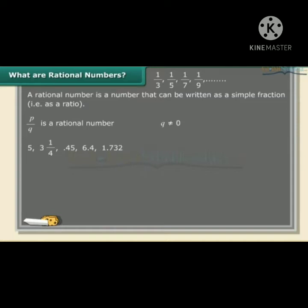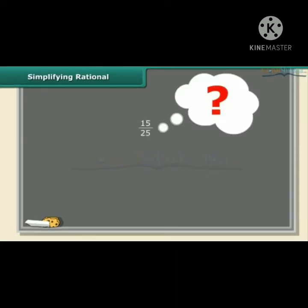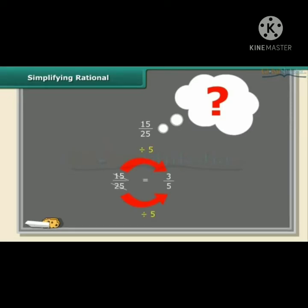Can you tell me whether these numbers are rational numbers or not? Yes, you are all correct. These numbers are rational numbers because they can be expressed in the form of P upon Q. Sometimes a rational number may not be in its simplest form — it can be further simplified. Divide the numerator and denominator by 5 to get 3 by 5. This is the simplest form. Remember, we can simplify a fraction by dividing numerator and denominator by a common factor.